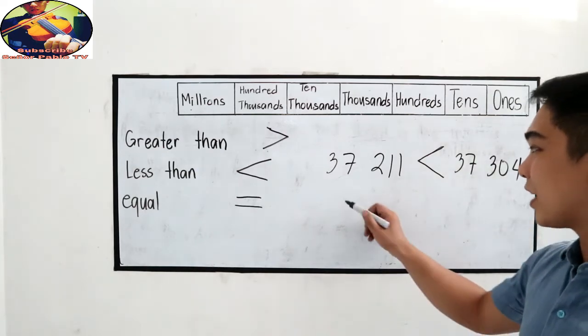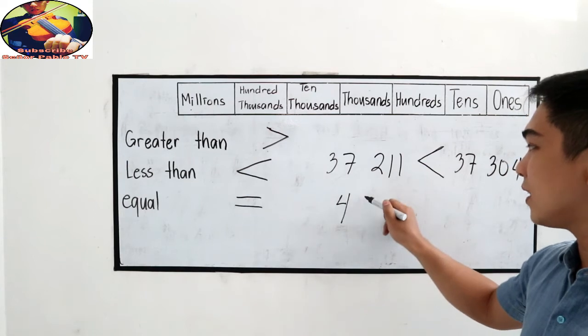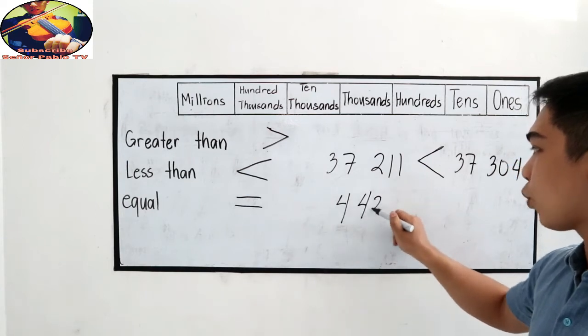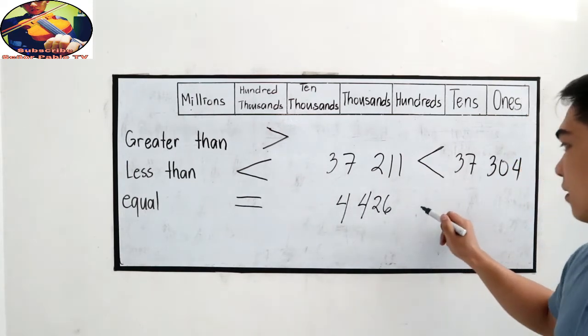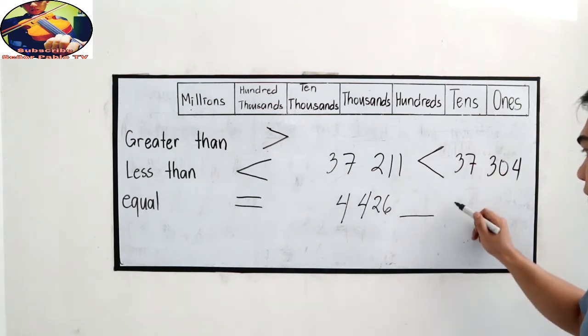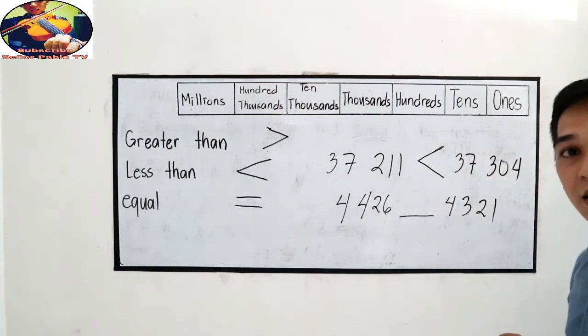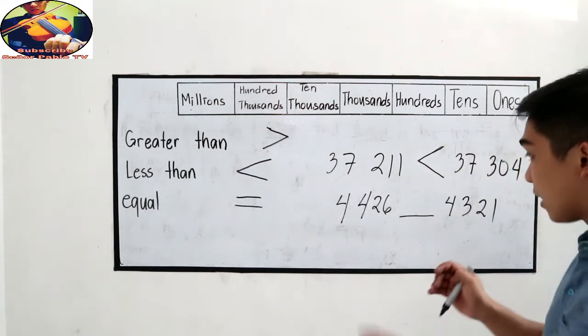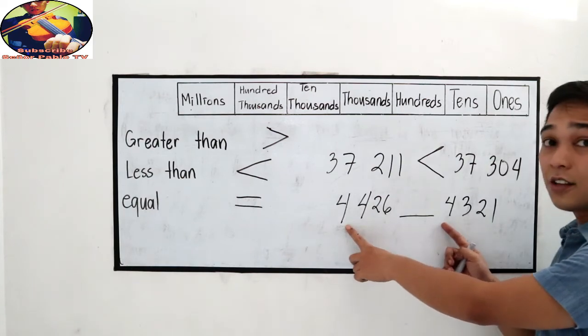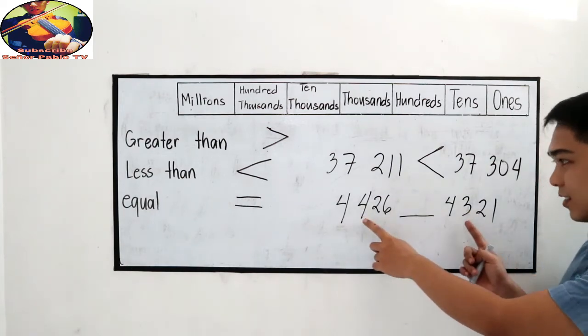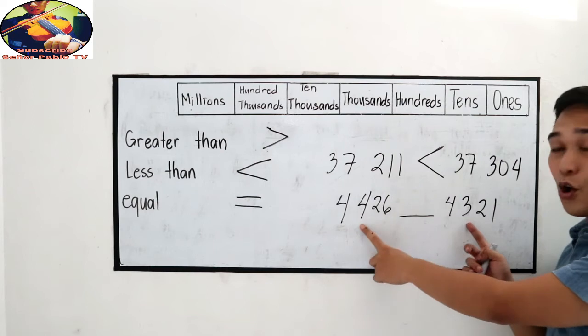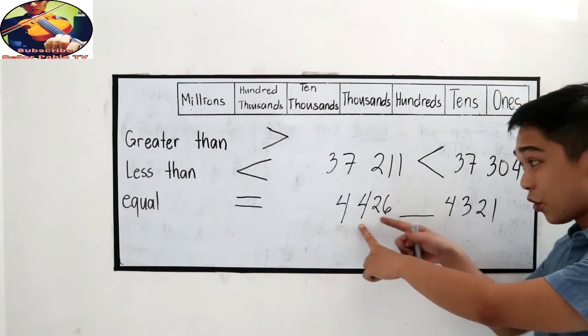Let's try another one: 4,426 compared to 4,321. Compare the highest place value, 4. They are equal. Then proceed to the next highest place value, 4 and 3, which is greater. Of course, 4.